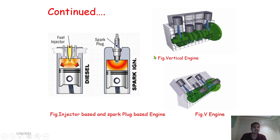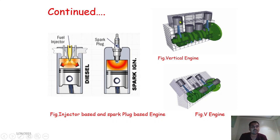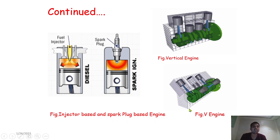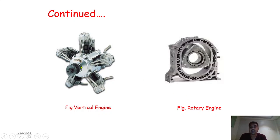Here are pictures showing different types of engines. A general engine image shows the piston, cylinder, and spark plug — injectors are used in diesel engines while spark plugs are used in conventional petrol engines. A vertical engine has the piston reciprocating in the vertical direction. In a V engine, the cylinders are arranged in a V-shape, and the pistons reciprocate in a V-direction.